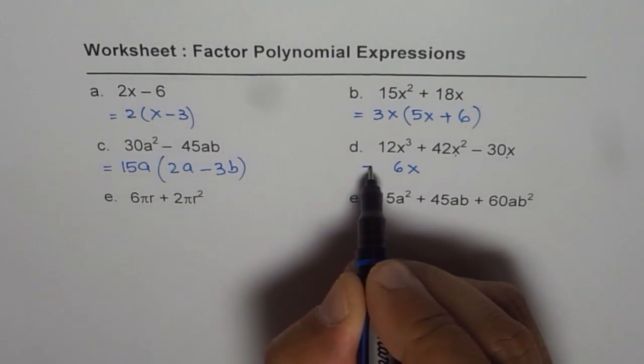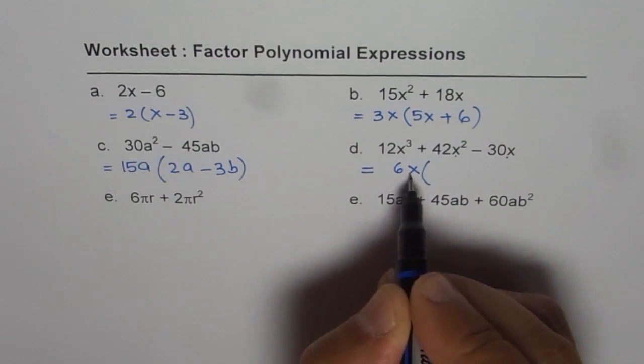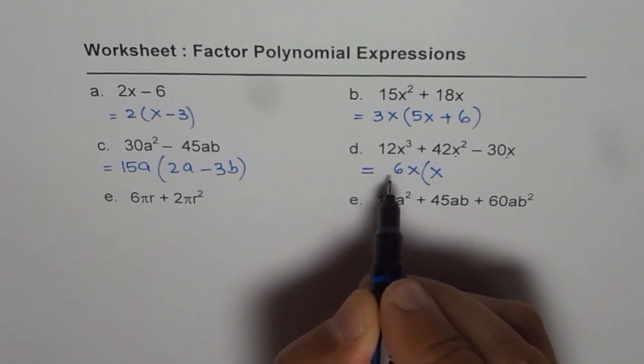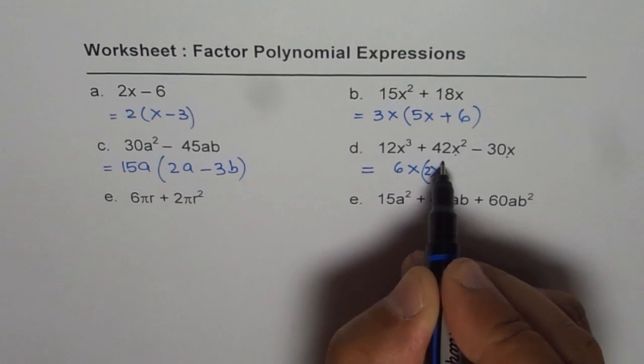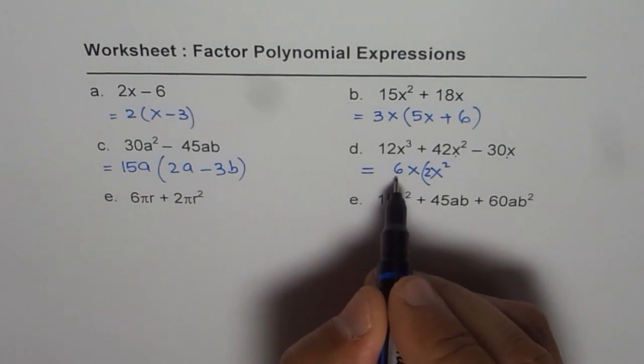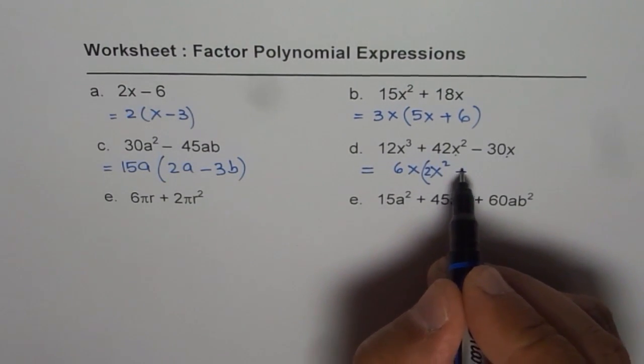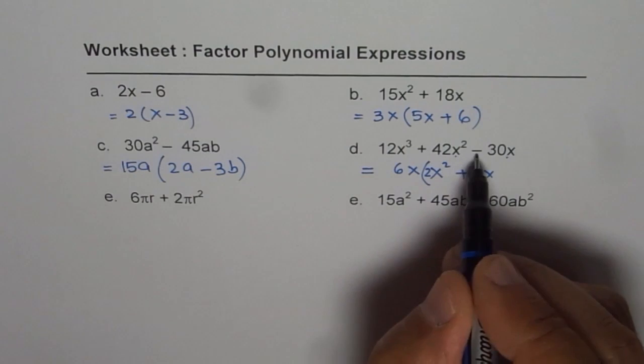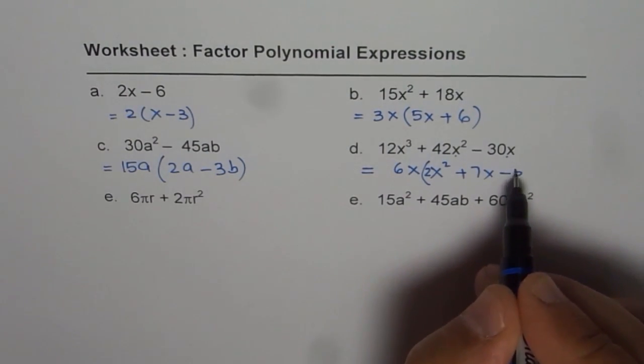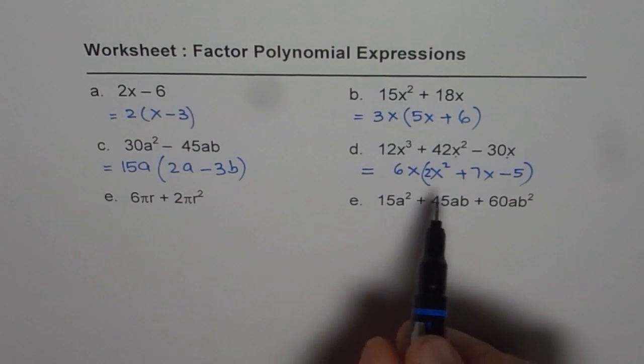We can write 6x, and within brackets we get 2x squared. 12 divided by 6 is 2. 6 times 7 is 42, so we get 7x. 6 times 5 is 30, so we have minus 5 as the term inside the bracket.